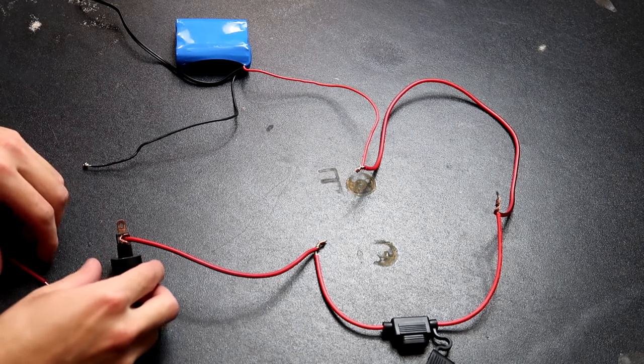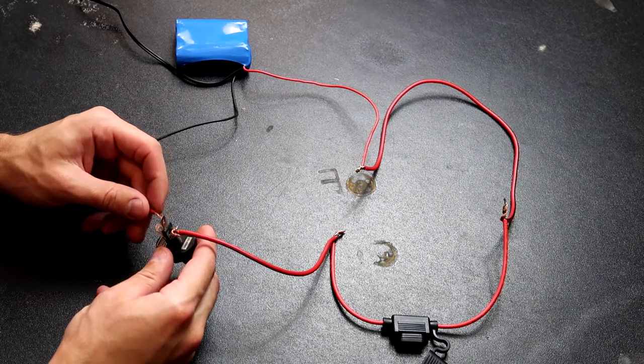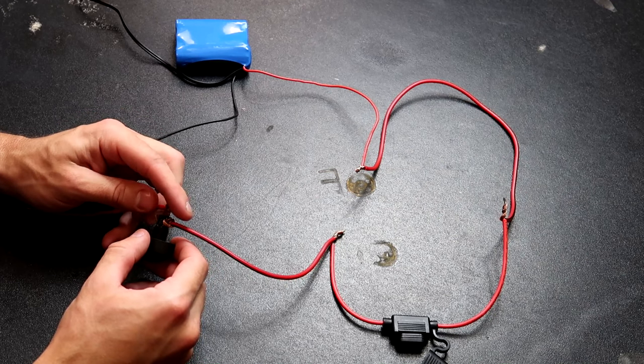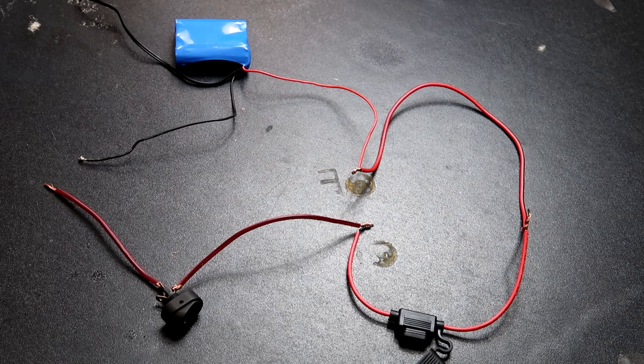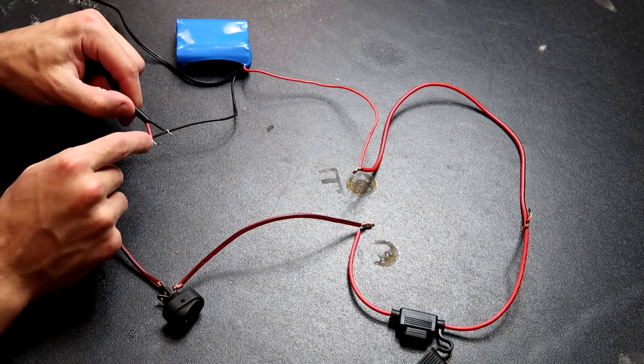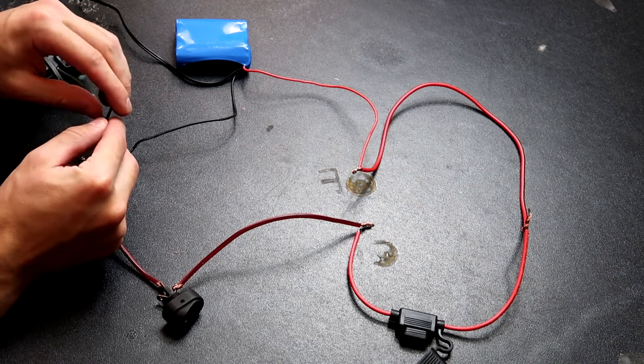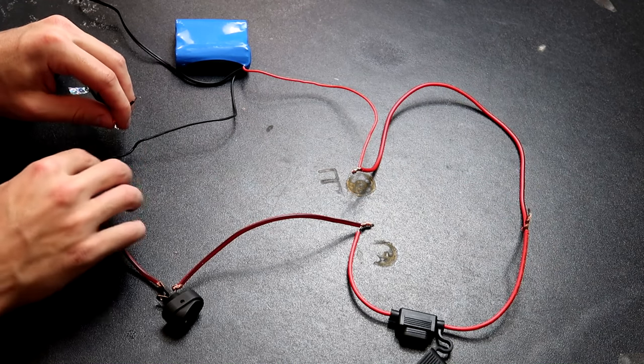We're going to need another wire and attach that to the load, the one in the middle. Then we can get our light, and you got a red and a black wire, attach to the red one.